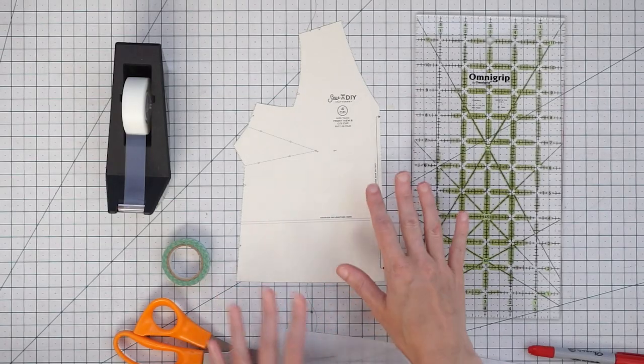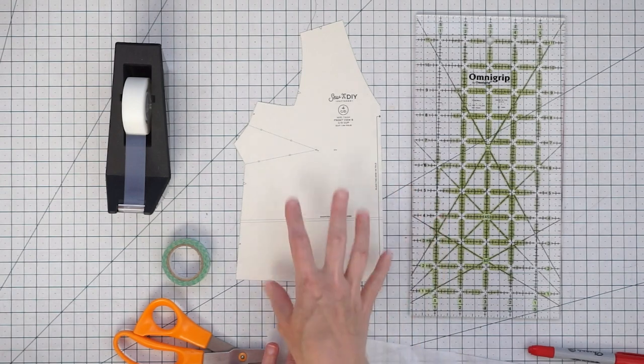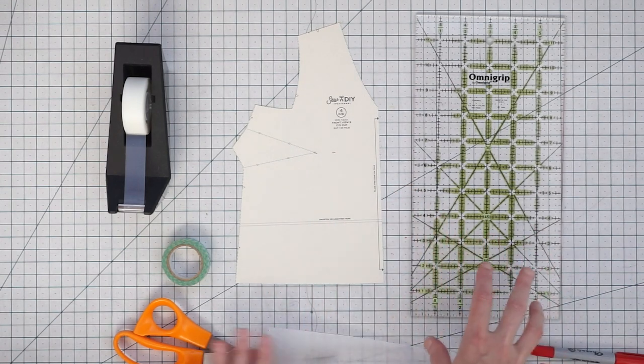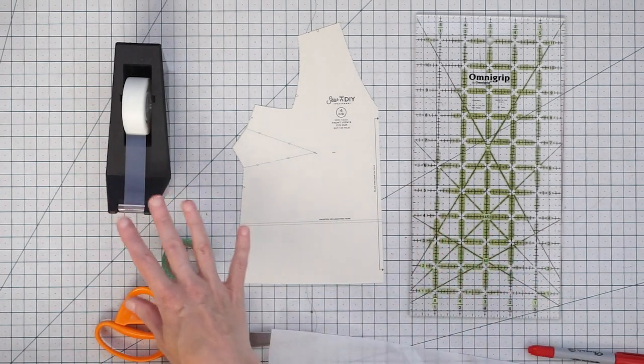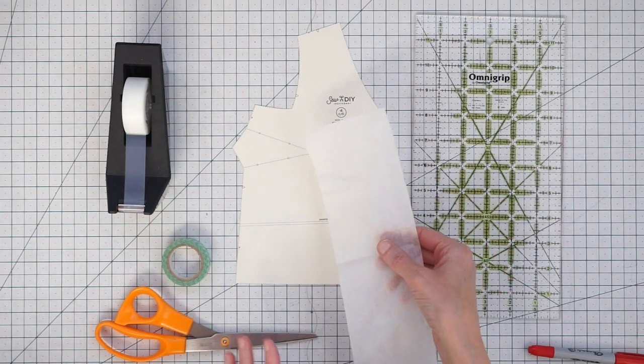To lengthen or shorten a blouse pattern you'll need your pattern, a ruler, a pen, some scissors, tape, and if you're lengthening you'll need a little bit of extra paper.